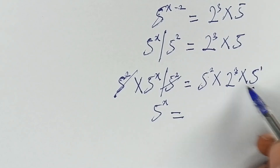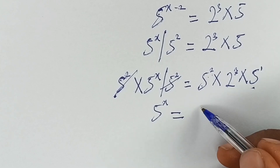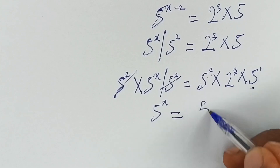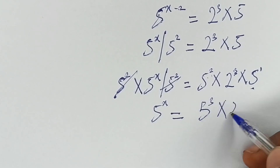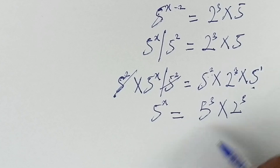When the bases are the same, you add the powers. So we have 2 plus 1 is 3. So we have 5 raised to the power 3 times 2 raised to the power 3.